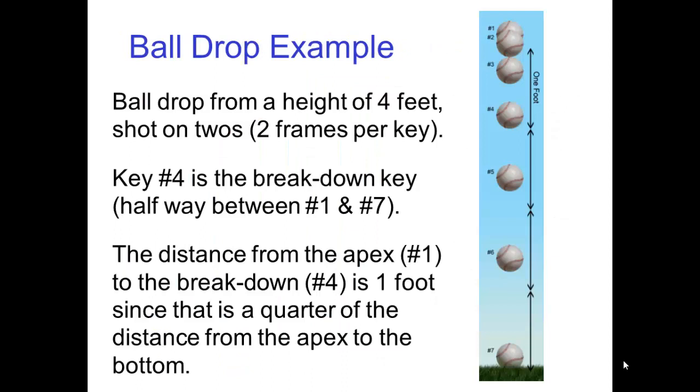Here's an example of a ball drop from a height of four feet shot on twos. That is two frames per key drawing. Key number four is the breakdown key, halfway between number one and number seven. The distance from the apex to the breakdown is one foot, since that is a quarter of the distance from the apex to the bottom.